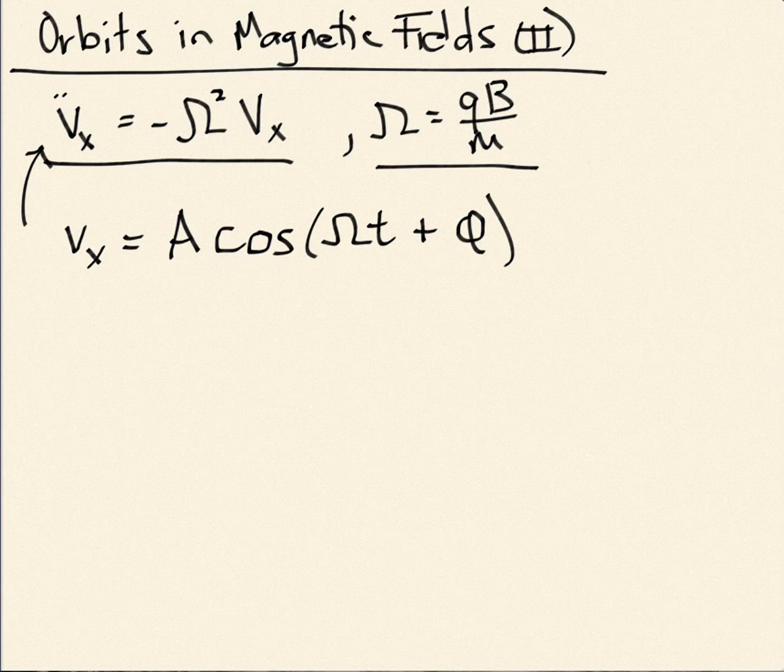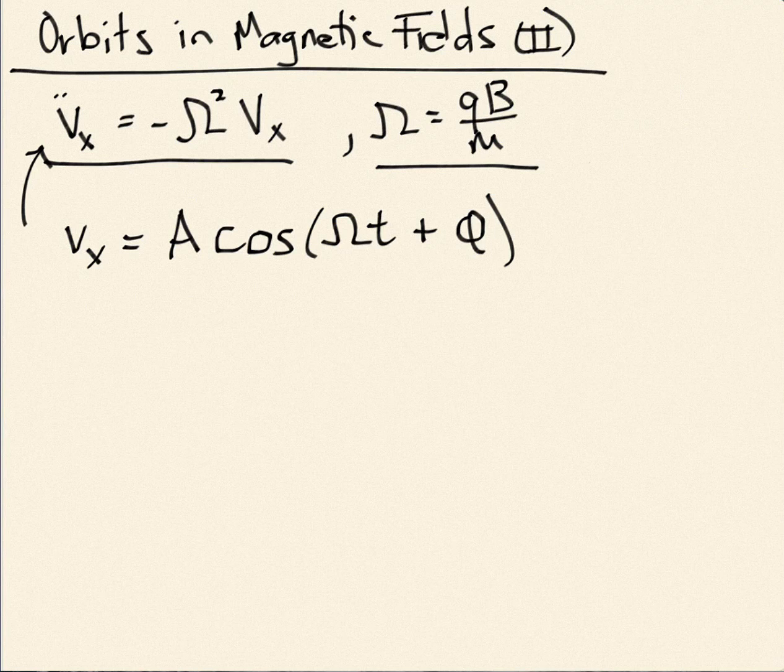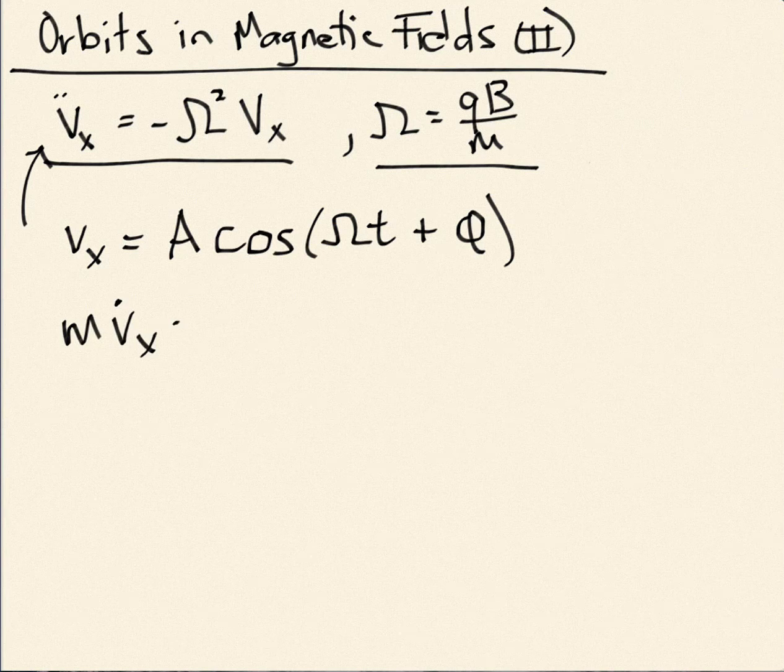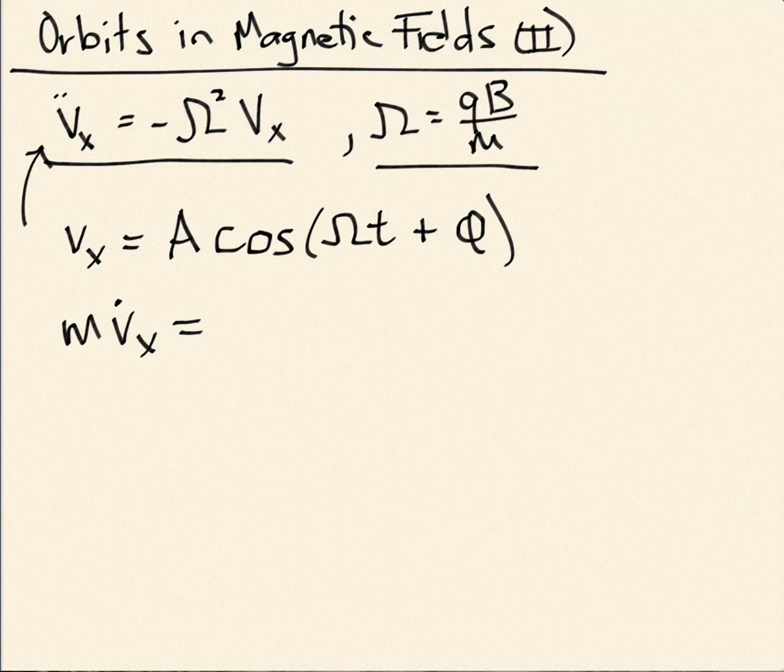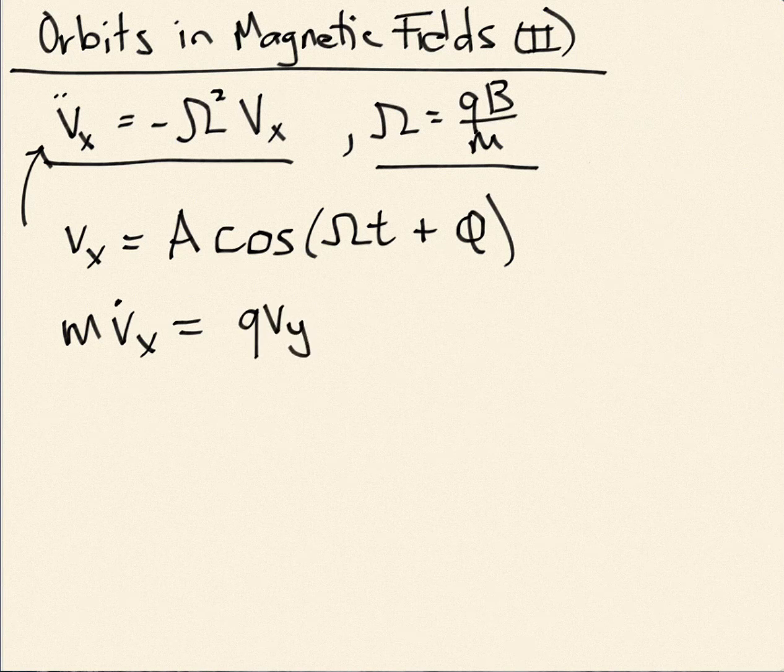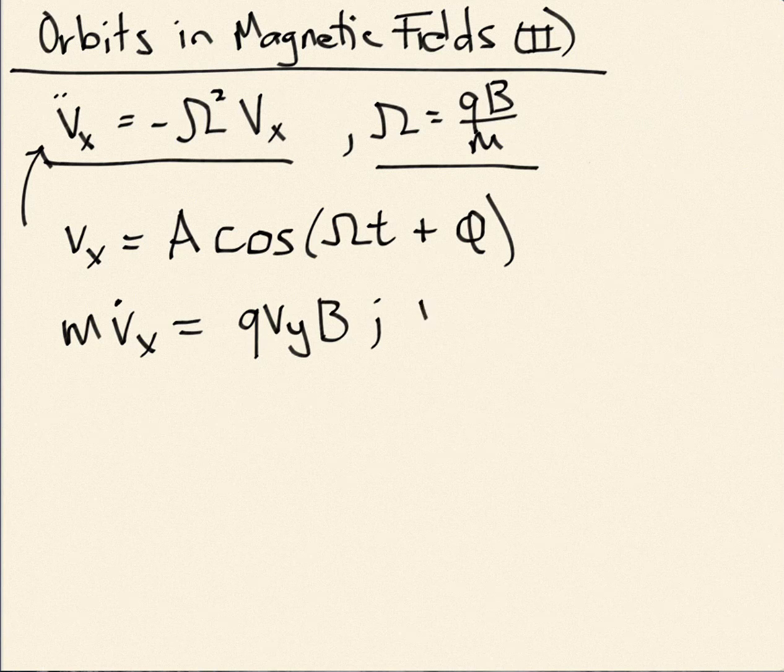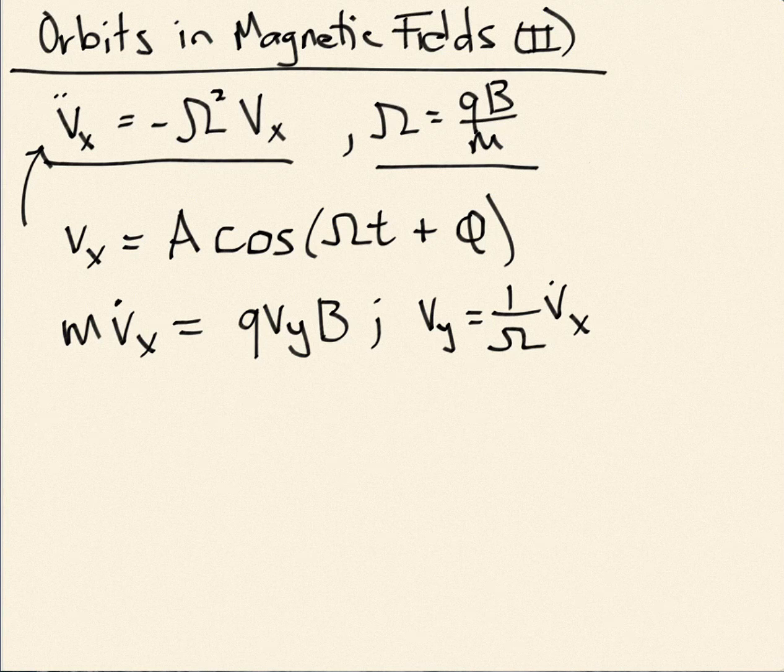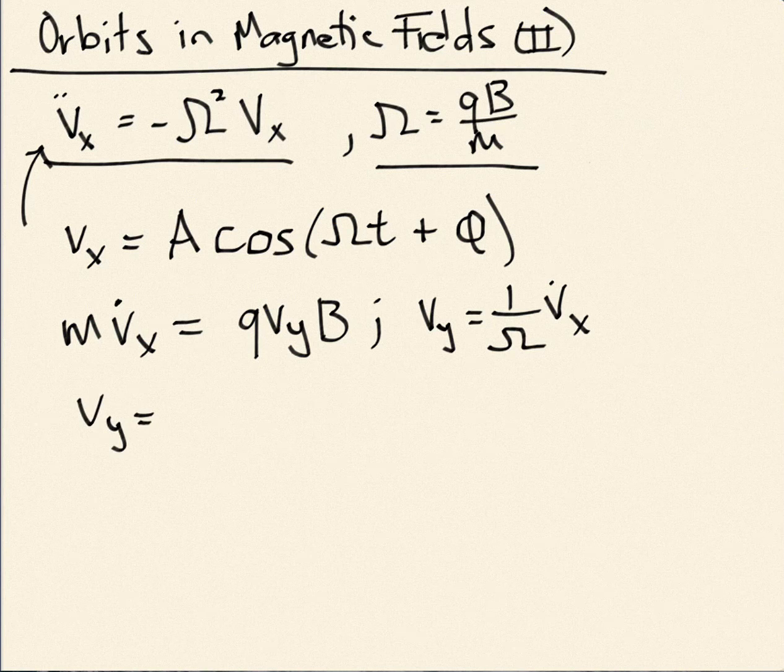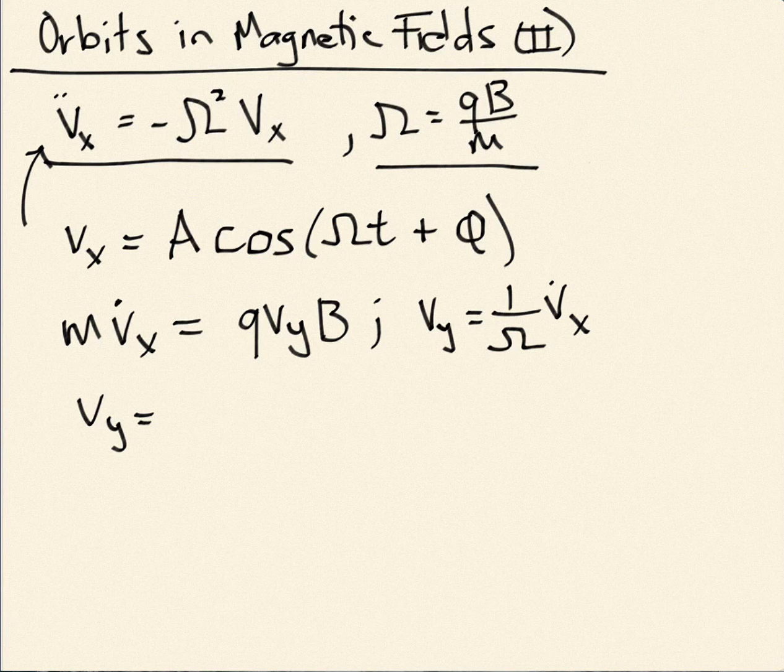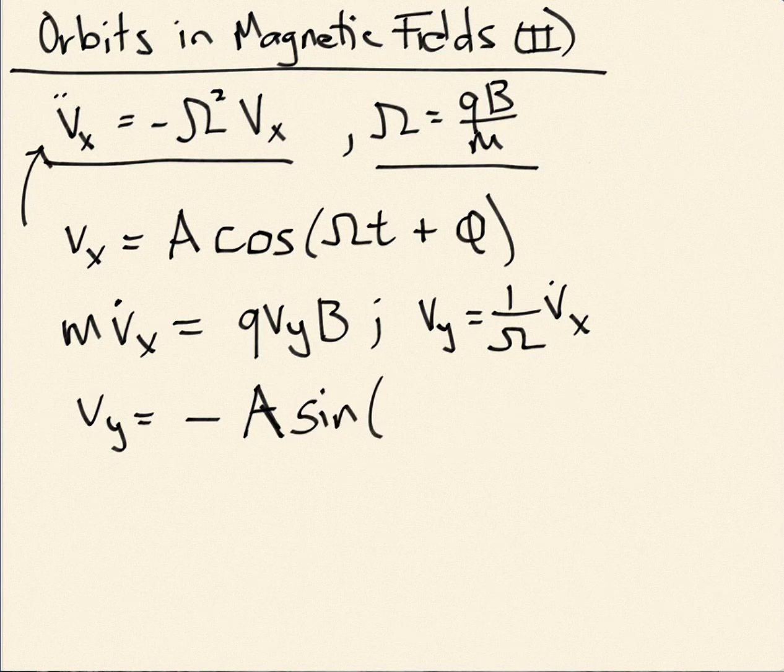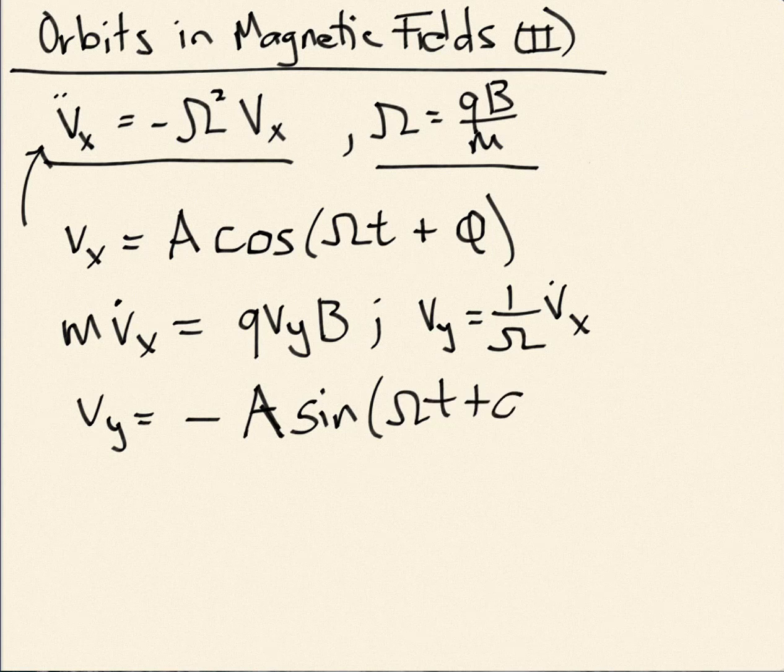Now, in the previous video, we had a relationship between vx and vy that we wrote down, and it comes from the F equals ma in the x direction, so this is ma equals F, and we found that F in the x direction is just q vy B, so this tells me that vy is just 1 over omega vx dot. And so I can write that down, I have vy then is going to be negative A times sine omega t plus phi.